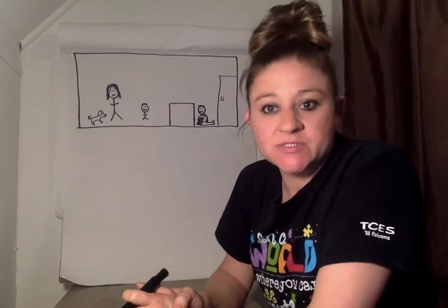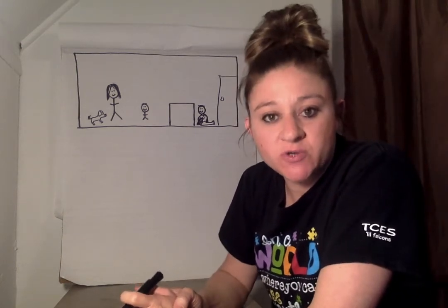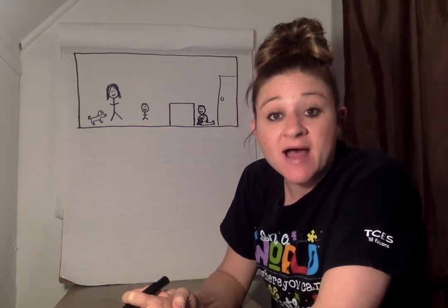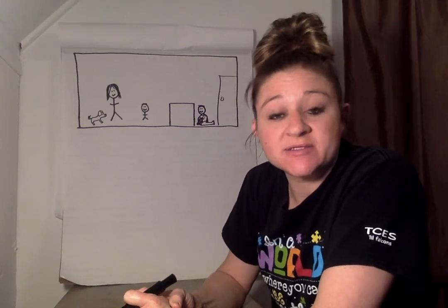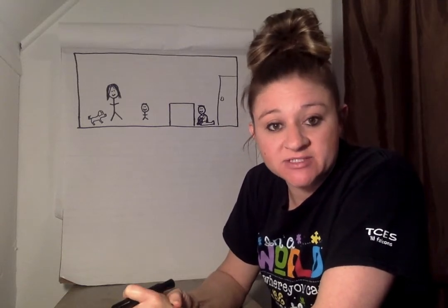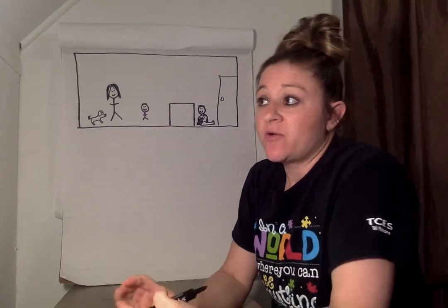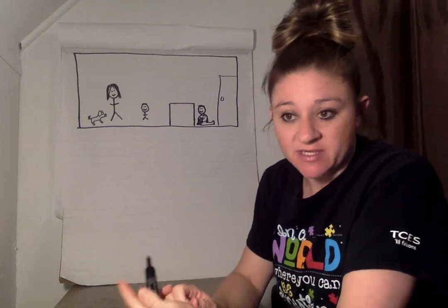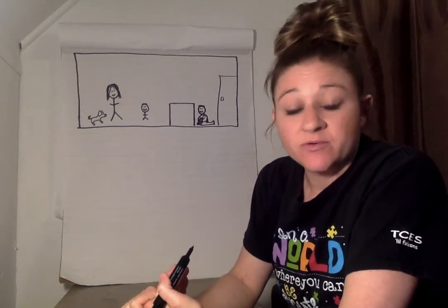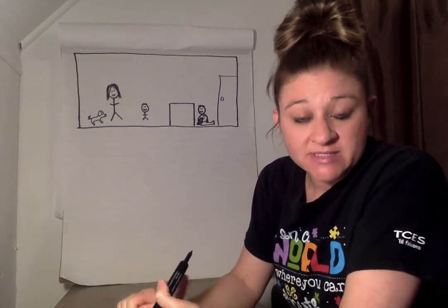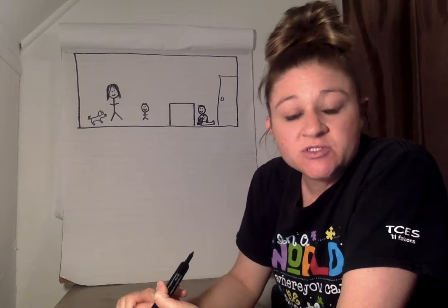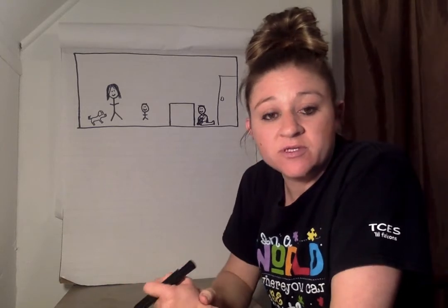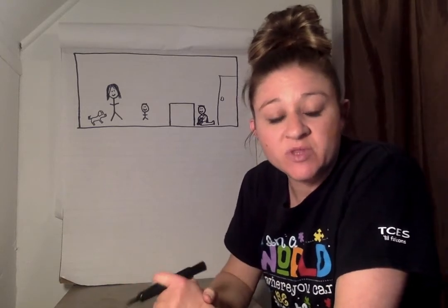Hi guys! Today I'm going to choose something from our choice board, and that's the writing section. I'm going to write you a story about something that I like to do with my family. When I write this story, I'm going to draw a picture, which I've already done. Then I'm going to write my sentences. The goal is to write four or more, and then I'm going to label the parts of my picture.